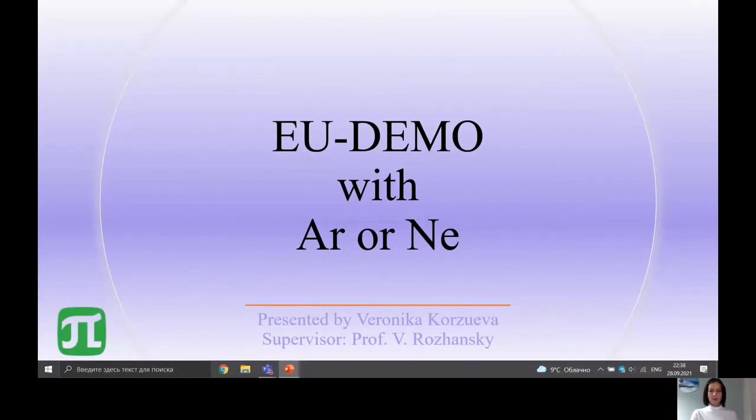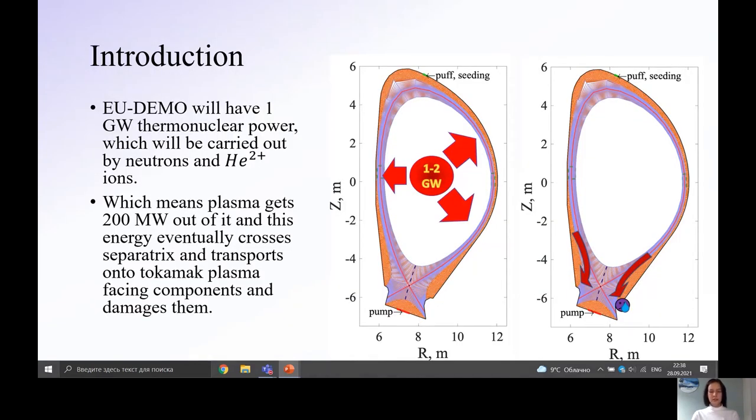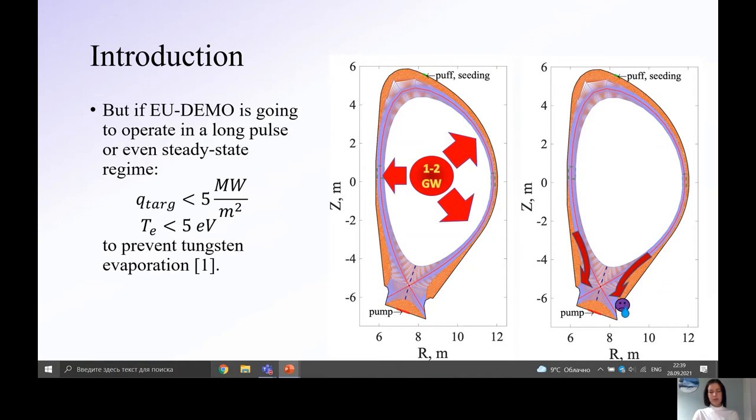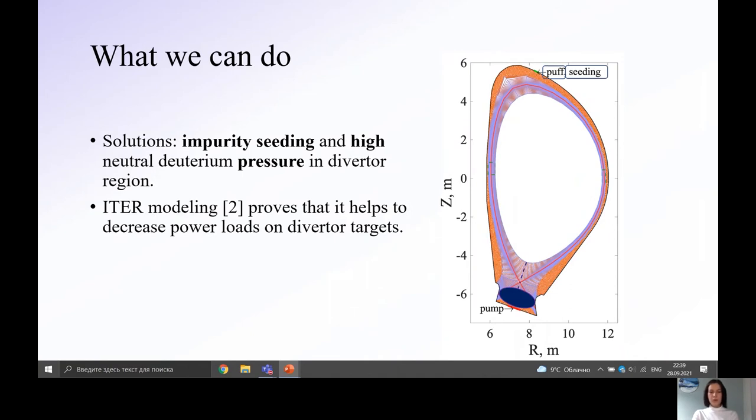Hello everyone! Today I'll tell you about UDEMO modeling with argon and neon seeding. UDEMO is a demonstration power station. It will gain about one gigawatt of thermonuclear power, one-fifth of which will be carried by alpha particles and absorbed by plasma. This power will eventually cross separatrix and transport onto plasma facing components and damage them.